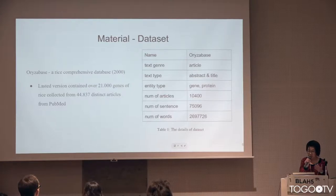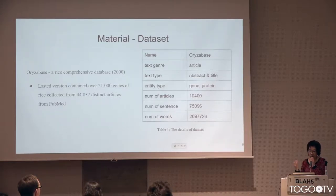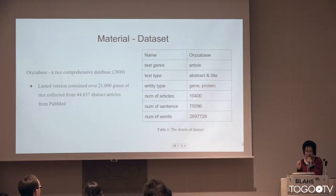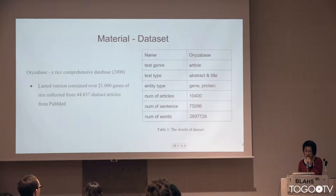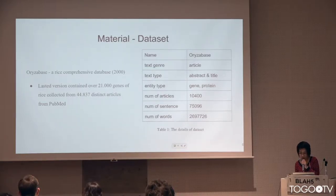Those genes were collected from about 45,000 articles from PubMed. Because quite an amount of those articles cannot be downloaded from PubMed, they used one-fourth of those articles, which is about 10,000 articles, totaling about 45,000 sentences.